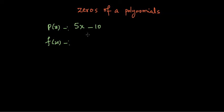Let us learn about zeros of a polynomial. We have seen a lot of polynomials. An example of a polynomial is something like 5x minus 10, and we name polynomials as P(x), f(x), etc. So P(x) is 5x minus 10.